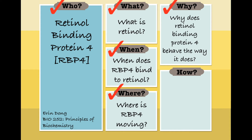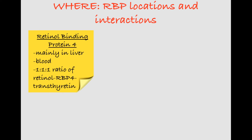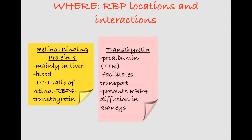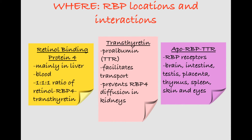In the blood, RBP interacts with another protein complex called transthyretin. This brings us to our next question of where: where is RBP found in the body and where is it going? While mainly synthesized in the liver, a large amount of RBP is found in the blood. RBP has a binding ratio of 1 to 1 to 1 with retinol and transthyretin. Transthyretin, also called proalbumin or TTR, facilitates the transport of RBP in the blood. By binding to the apo RBP complex, transthyretin increases the molecular weight of the whole complex and prevents the diffusion of RBP in the kidneys. The apo RBP-TTR complex moves to target tissues that contain the RBP receptor cells.